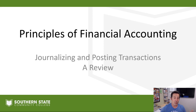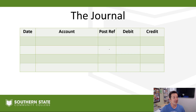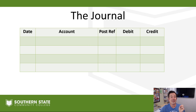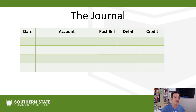So we're going to journalize. To do that, you need to know what the journal looks like — we've already seen the accounting journal. We're going to have a column for the date, a column for the accounts, a column for our posting reference, and then debit and credit of the transaction.